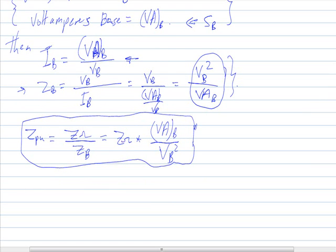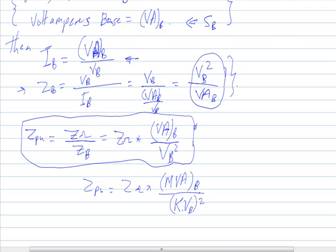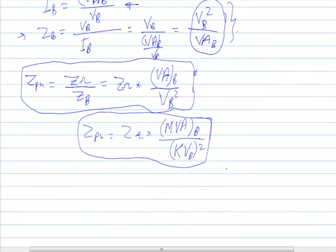Sometimes, instead of using the base quantities directly, we express the per unit impedance of any component in the power system as the actual impedance multiplied by the mega volt-ampere base divided by the kilovolt base squared. So the voltage is taken in kilovolts and the apparent power is taken in mega volt-amperes. This is equation number one, used in power system analysis for single-phase circuits.